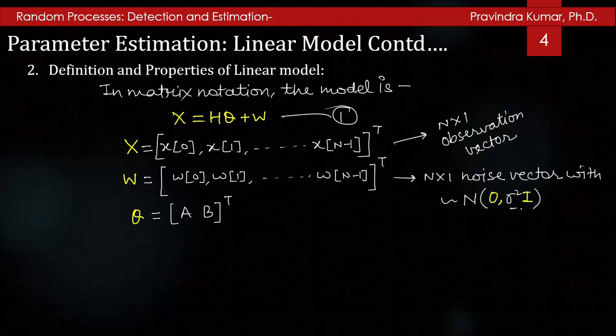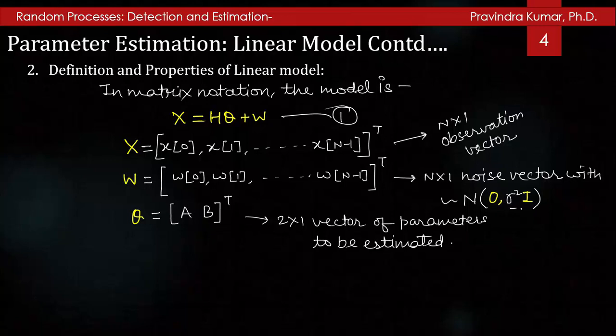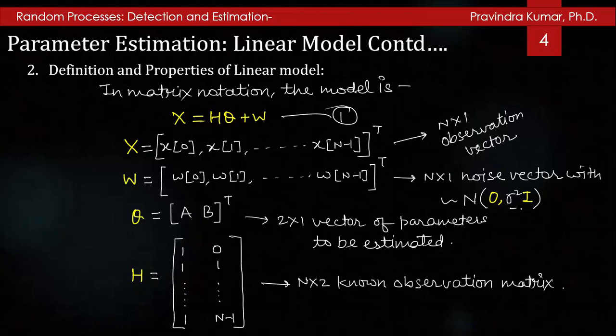θ is the transpose of the vector [a, b], which is a 2×1 vector of parameters to be estimated. Here H is the matrix with rows [1, 0], [1, 1], [1, 0], [1, 1], ..., [1, N−1], so it is an N×2 observation matrix.